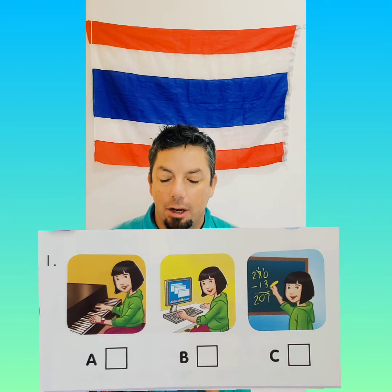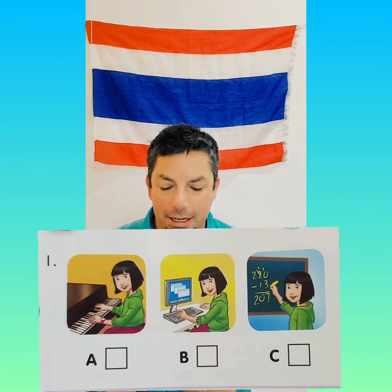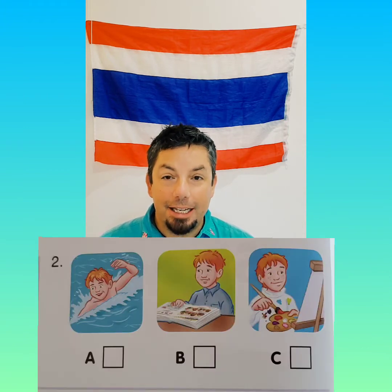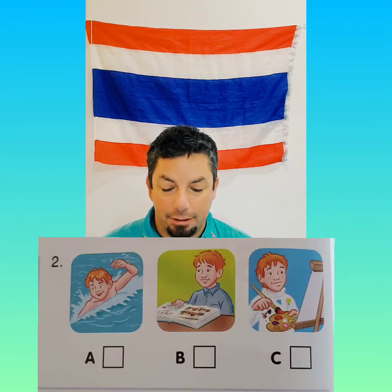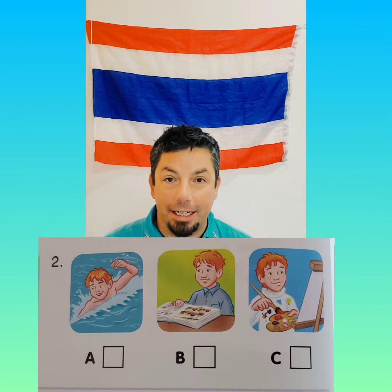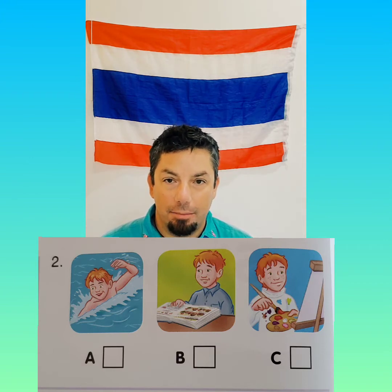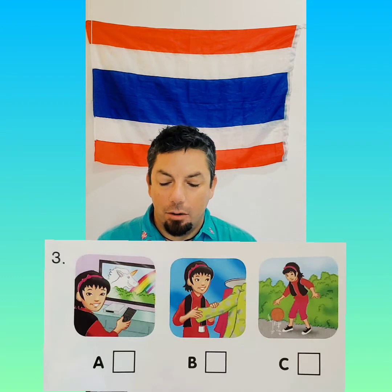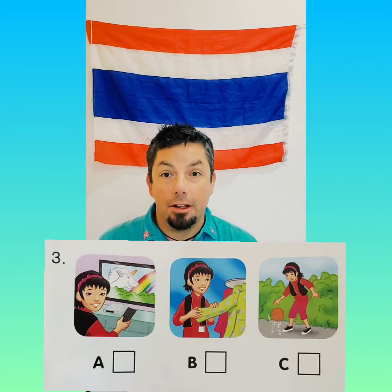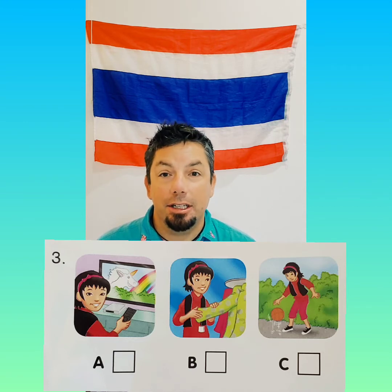She goes to math class. Number two: What does he do on Monday? He goes to English class. Number three: What does she do on the weekend? She plays outside.